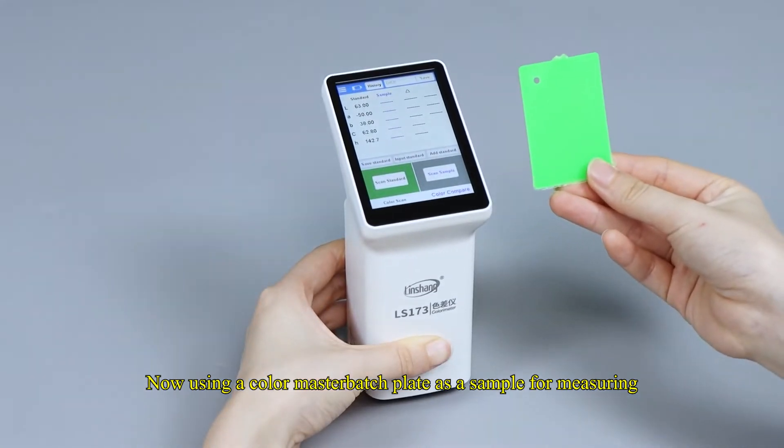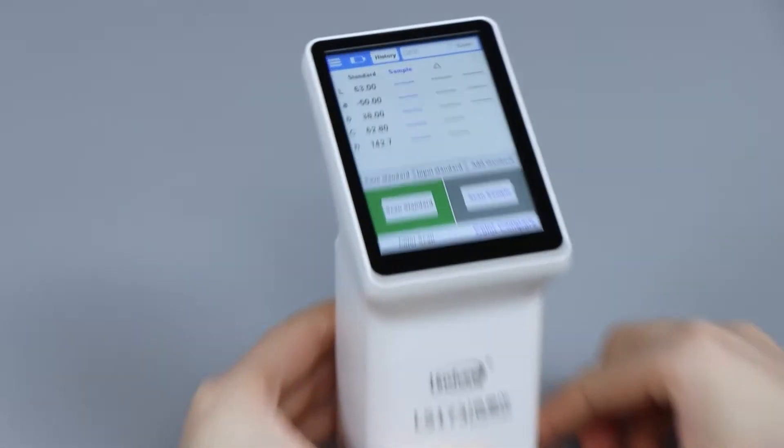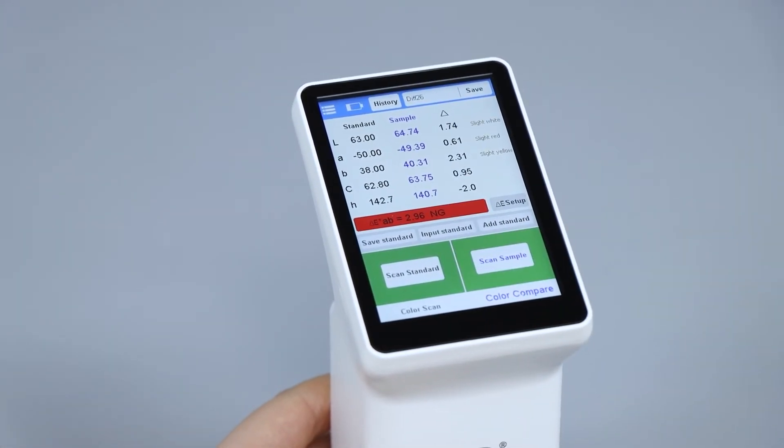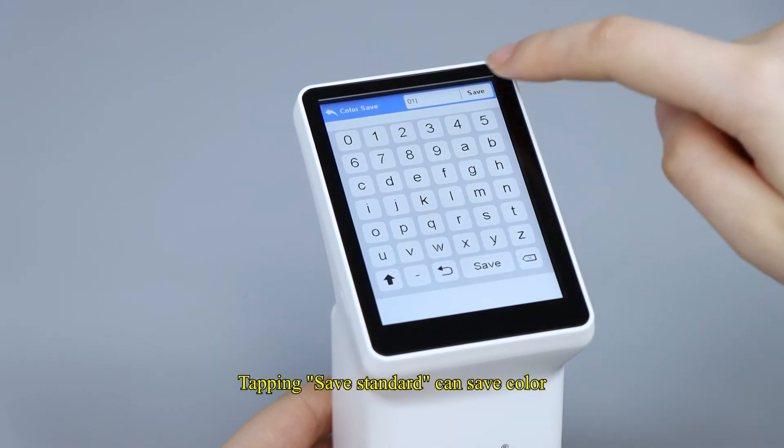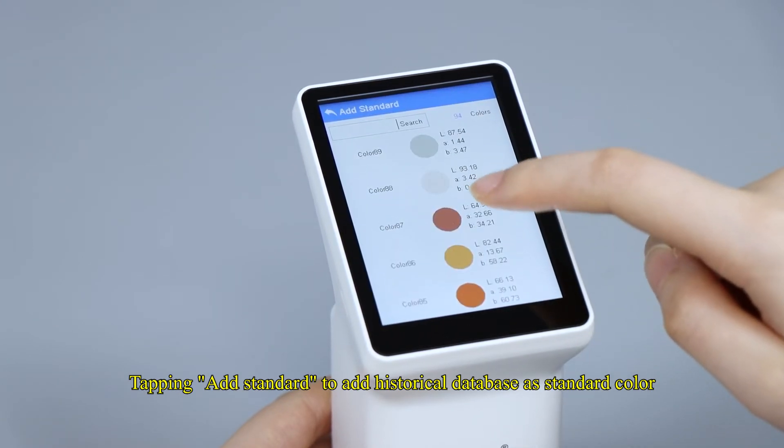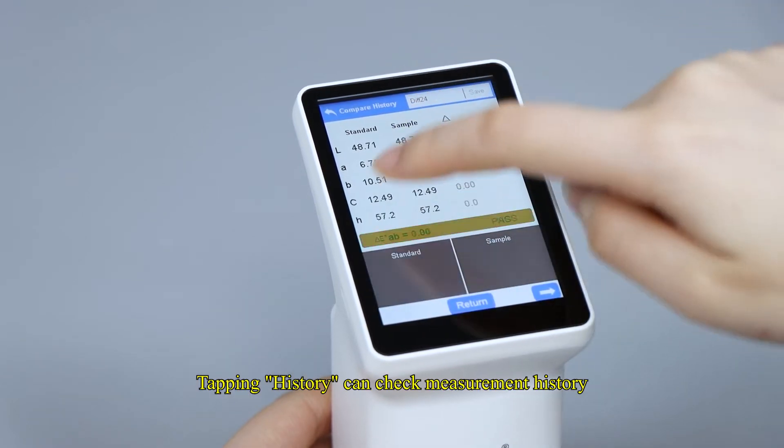Now using a color master batch plate as a sample for measuring. Tapping save standard can save color. Tapping add standard to add historical database as standard color. Tapping history can check measurement history.